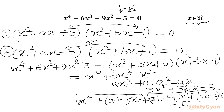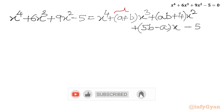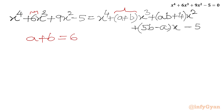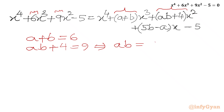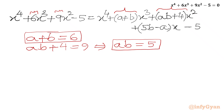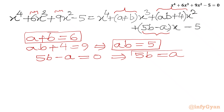Now we have to compare coefficients from both sides. Comparing the coefficient of x³: a + b = 6. Comparing the coefficient of x²: ab + 4 = 9, so ab = 5. And comparing the coefficient of x: 5b − a = 0, so 5b = a. This is our third equation.